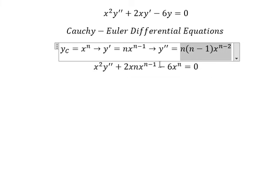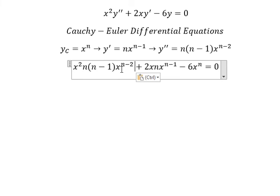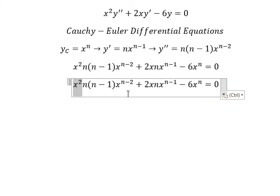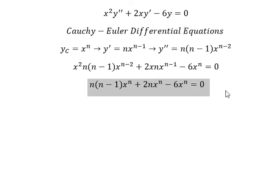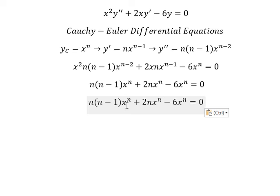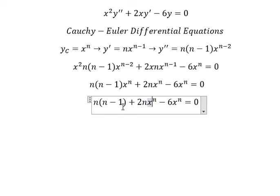So we know that x squared multiplied by x to the power of n minus 2 gives us x to the power of n. Similar for this one. Next, x to the power of n, we can do factorization.